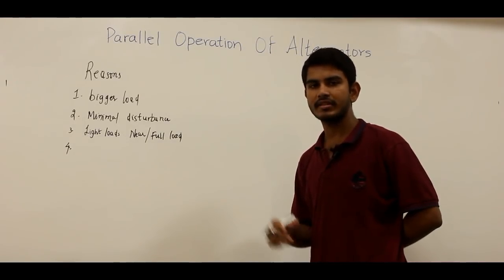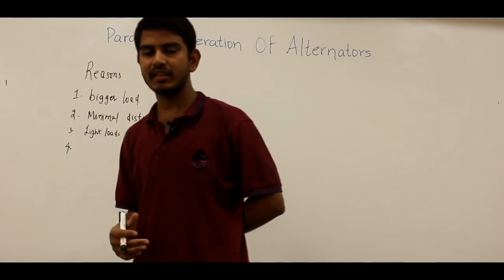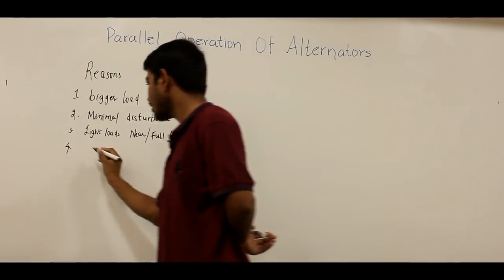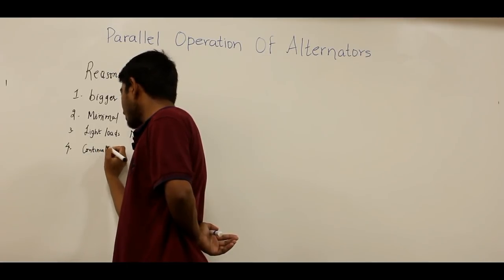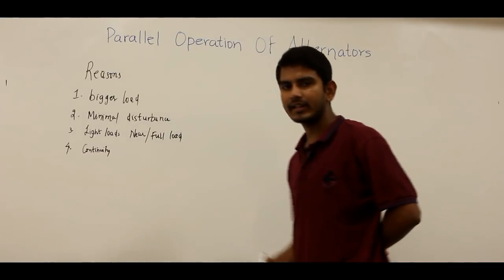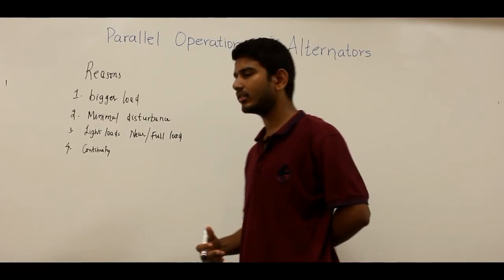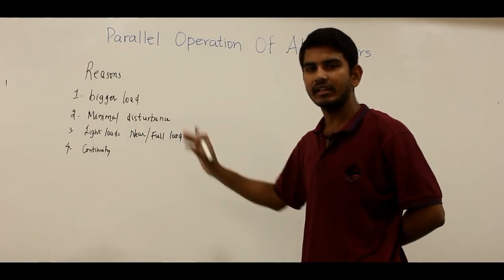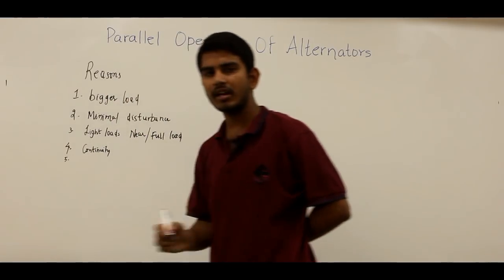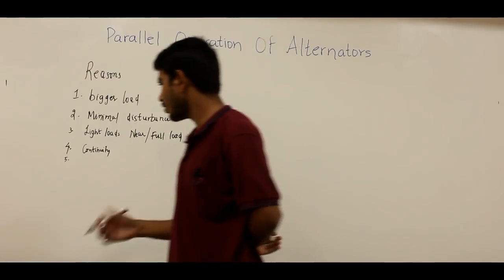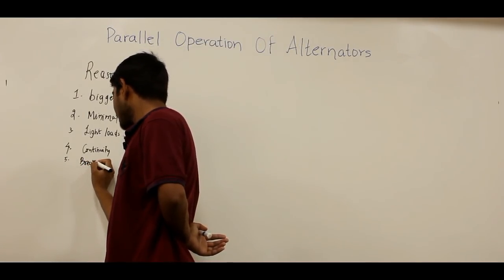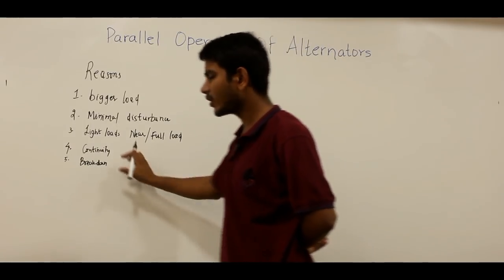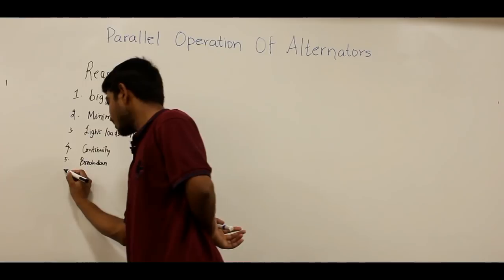The fourth reason is that when one of the alternators is taken out for scheduled maintenance and inspection, the remaining alternators will maintain the continuity of supply — there will be no interruption in power supply. The fifth reason is that if there is a breakdown of one alternator, there will be no interruption in the power supply even though one alternator has broken down.